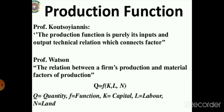The production function, according to Professor Koutsoyiannis, is purely an input-output technical relation which connects factors of production. It describes the relationship between a firm's production and the material factors of production. The formula is: Q = f(K, L, N), where Q is quantity, K is capital, L is labor, and N is land.